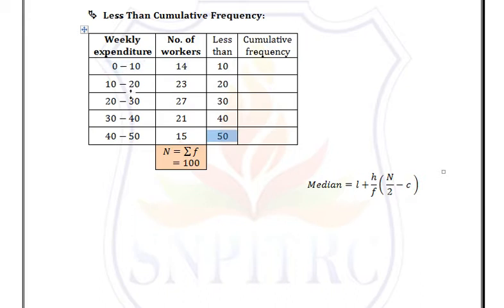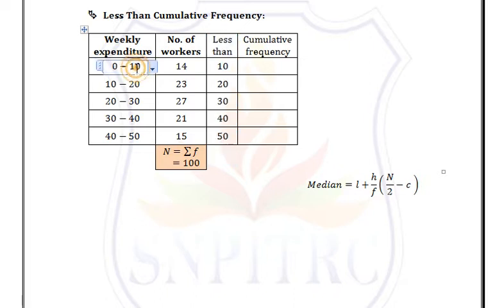This column is optional. But before defining cumulative frequency, make sure that the classes are in exclusive form. If you have an inclusive class, you must convert it to exclusive form. Exclusive means the ending point of one class is the starting point of the next.